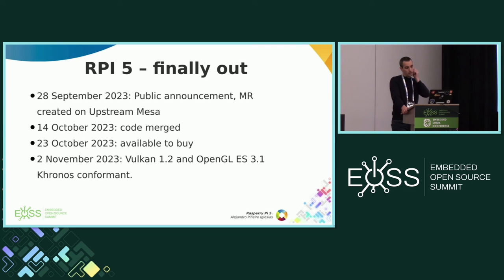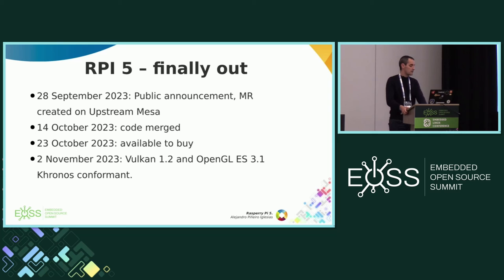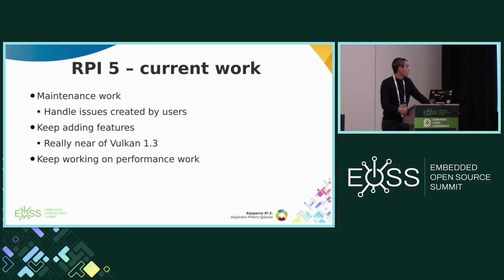In October of last year, the Raspberry Pi 5 was available to buy. Two months later, our code received from Khronos the Vulkan 1.2 and OpenGL ES 3.1 conformance.